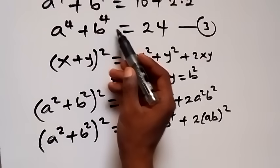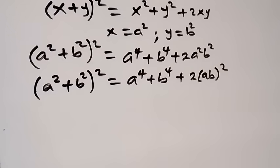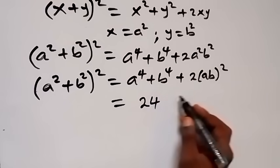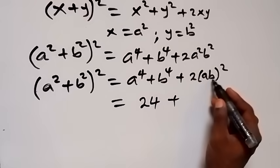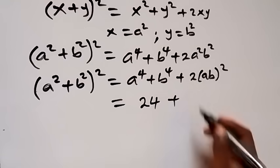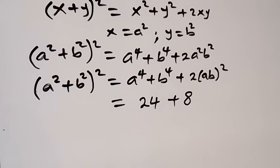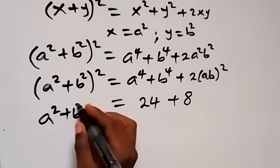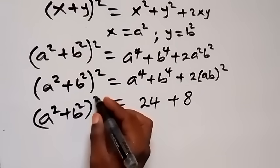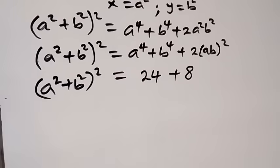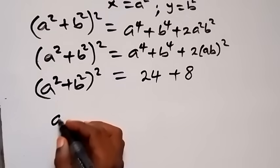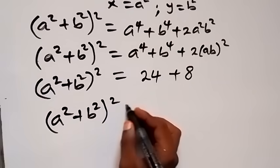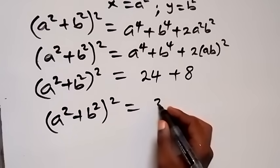Substituting those values: (a² + b²)² equals 24 plus 2 times 2 squared, which is 24 plus 2 times 4, that's 24 plus 8. So (a² + b²)² equals 32.